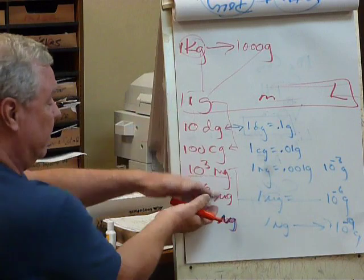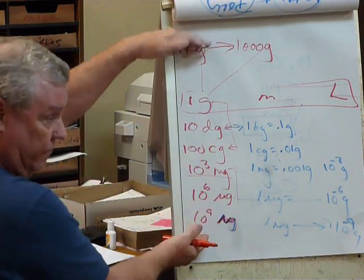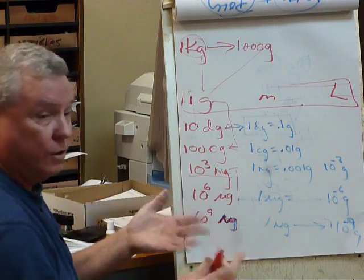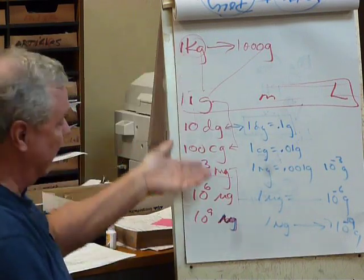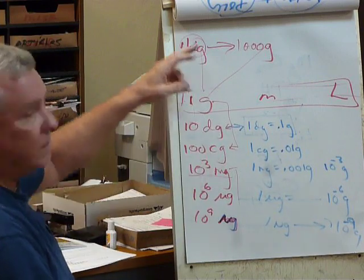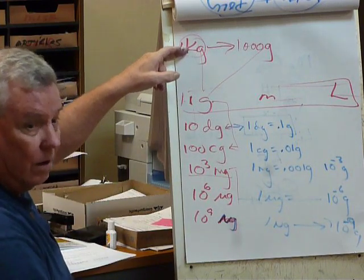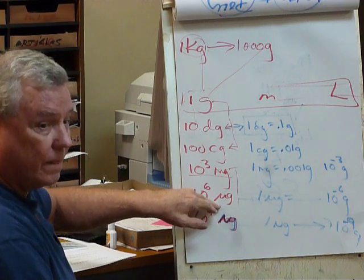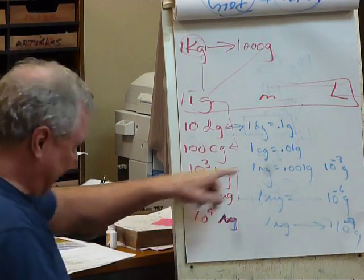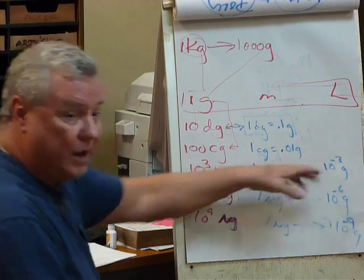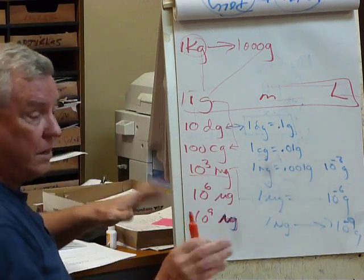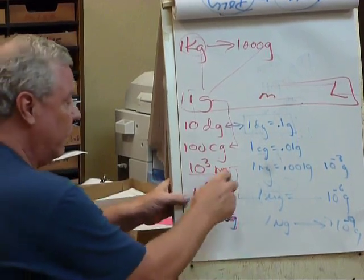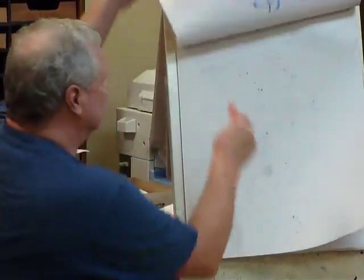A kilo is a thousand grams. You're going to get messed up here for this reason. When you're down in the basement here in our virtual hotel, the gram is the big guy. But when you get out of the basement and move up to the higher floors in the hotel, the kilogram is the big guy. So one kilogram is a thousand grams. But one gram is a thousand milligrams.